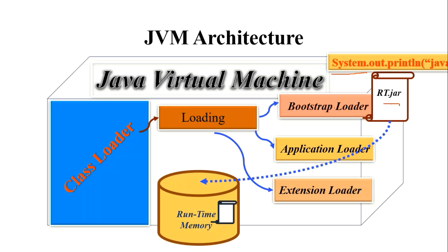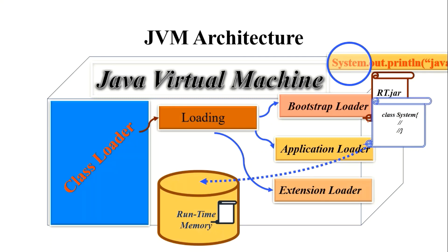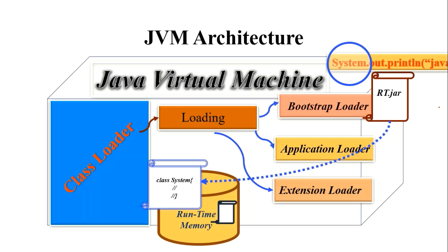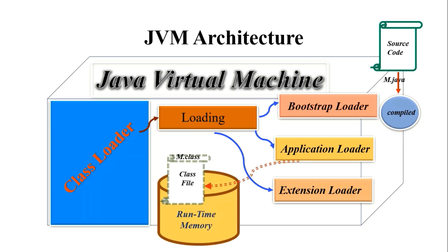The bootstrap class loader loads the System class from rt.jar to the runtime memory. The System class is written inside rt.jar, and rt.jar loads this System class into memory — this is done by the bootstrap loader. Whenever we have a source file and it is compiled, we get a .class file. This .class file is loaded into runtime memory with the help of the application loader.